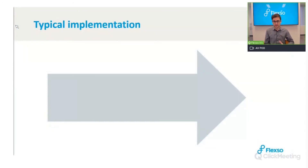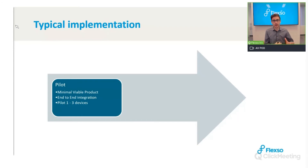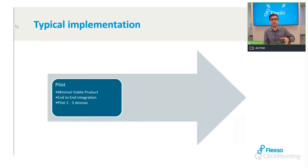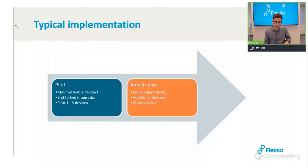A typical implementation starts with a pilot creating a Minimum Viable Product — start small. We make it end-to-end from development to productive environment, starting with one to three devices until it's working. Then we industrialize. In the scale phase, we transfer knowledge to you so your team understands everything as well as we do, and you can start adding features and more devices — growing from a few devices to bigger deployments.